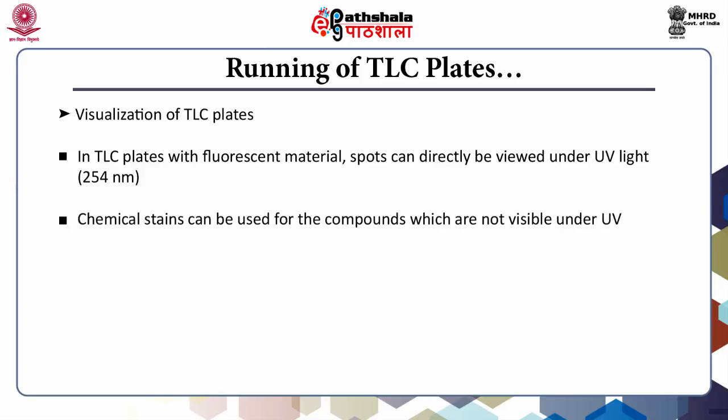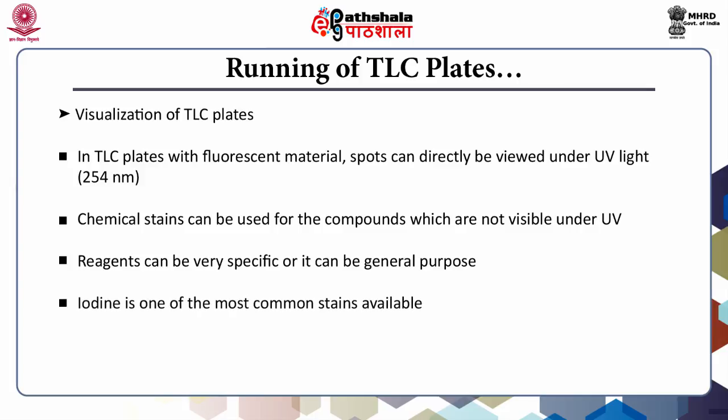A number of chemical stains can be used for compounds which are not visible under UV. A chemical stain or locating reagent can be very specific for a particular molecule or functional group, or it can be a general purpose stain, like iodine, which is the most common stain available. When plates are placed in a chamber containing iodine crystals or sprayed with iodine, most organic compounds stain brown.